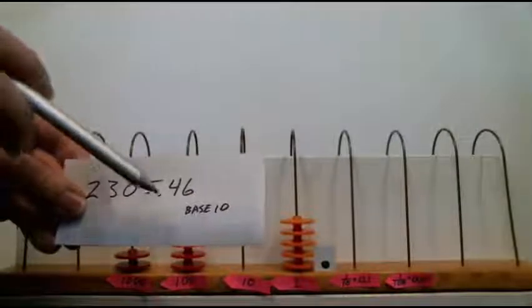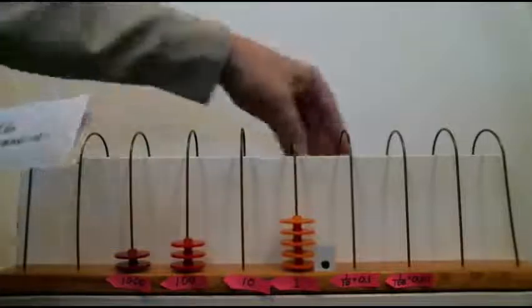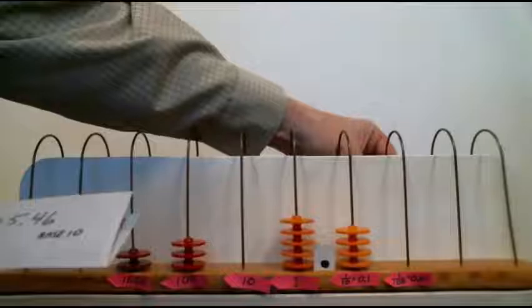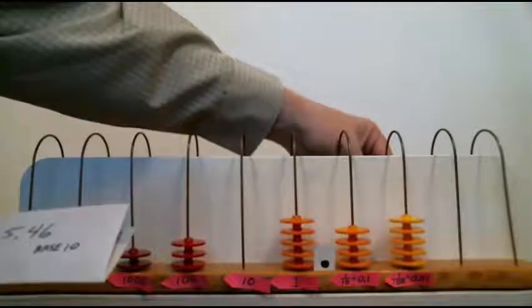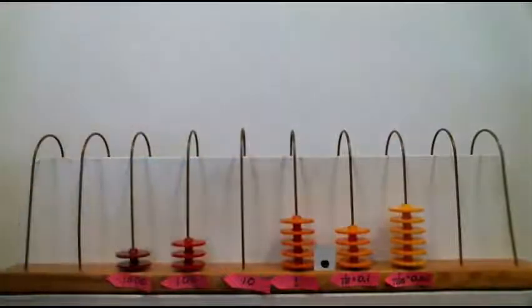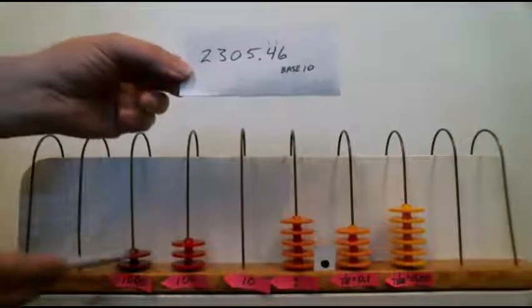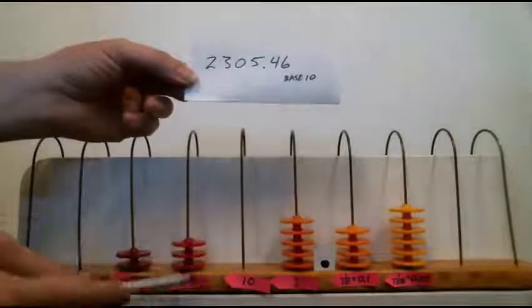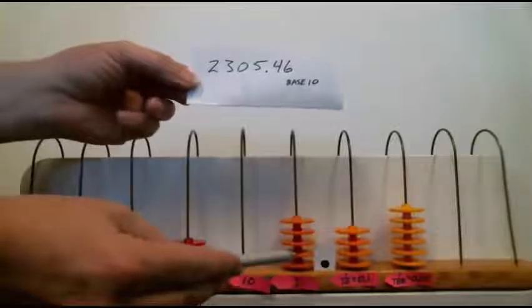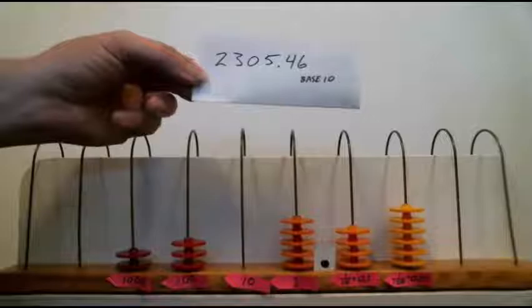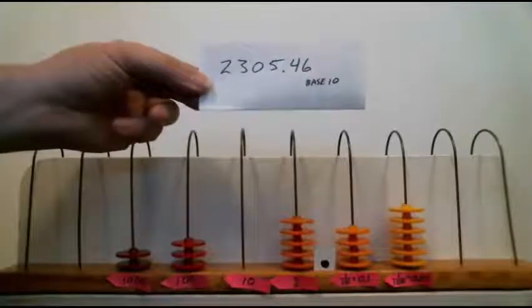And I want to express this number. So here's the number I want to express in base 10 on this abacus, 2305.46. So all we do is we just put the right number of beads on the right wires. I need 5 on the 1's wire. I need 0 on the 10's wire. That's why we have a 0 in our number system.